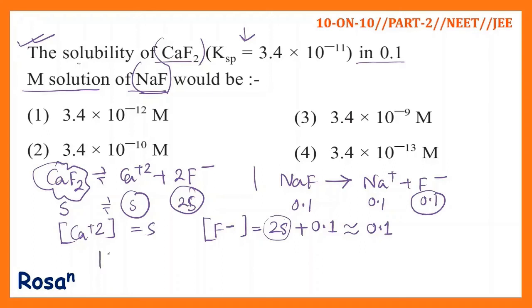Now the Ksp, solubility product of CaF2, is equal to Ca2+ concentration times F- concentration squared, because here the stoichiometric coefficient is 2.